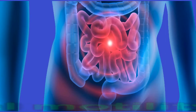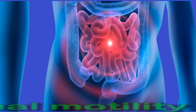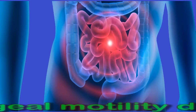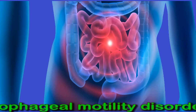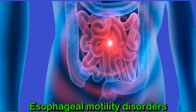Esophageal motility disorders: these occur when muscles in the esophagus are not working properly to move food from the mouth to the stomach. These disorders are uncommon, but scientists believe they may cause chest pain and difficulty swallowing in some people. Examples include achalasia, which occurs when the ring of muscles at the bottom of the esophagus is not able to relax, and jackhammer esophagus, which causes strong muscle spasms in the esophagus.